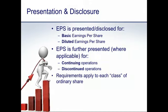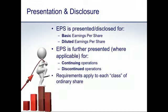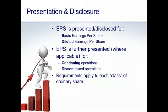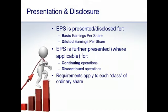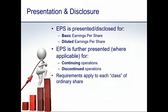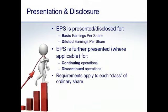Where an entity has applied IFRS 5 — non-current assets held for sale and discontinued operations — and a subsidiary meets the criteria for a discontinued operation, the entity is required to present on the statement of comprehensive income which profits are from continuing operations and which relate to discontinued operations. You're therefore required to calculate EPS on those two subtotals as well as the combined EPS.